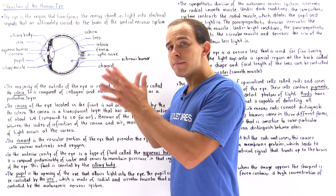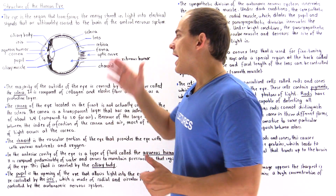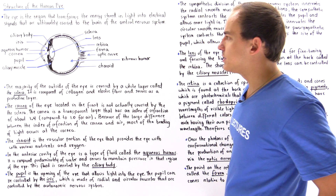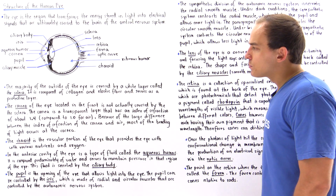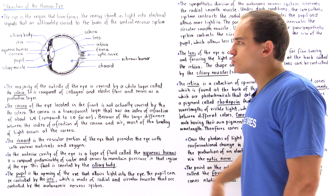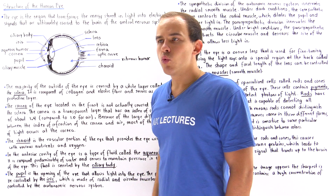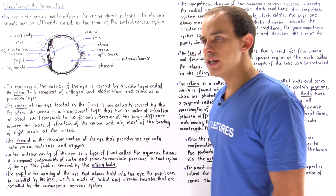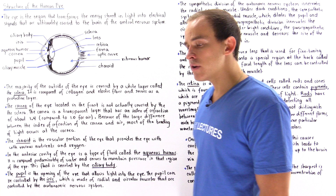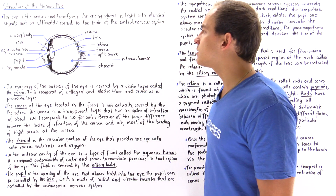If we examine the eye from a side view and take a cross section, we get the following diagram. Let's go through each one of these individual structures of the eye and discuss what their function is, beginning with the outermost portion of the eye known as the sclera.